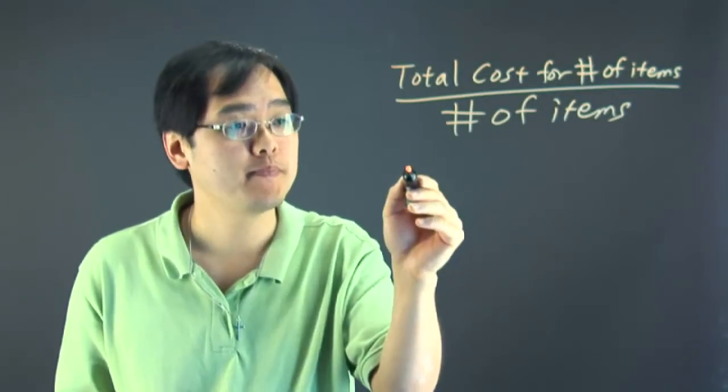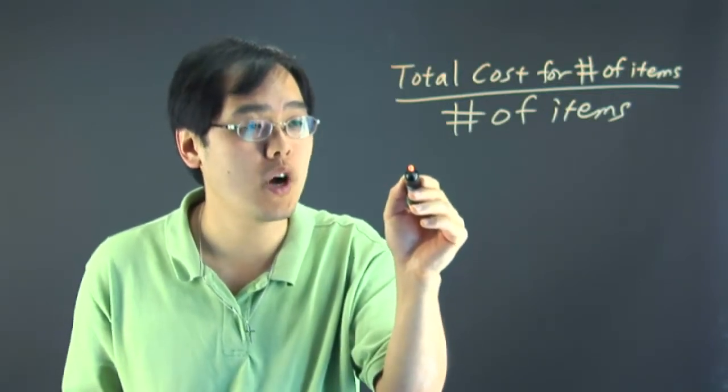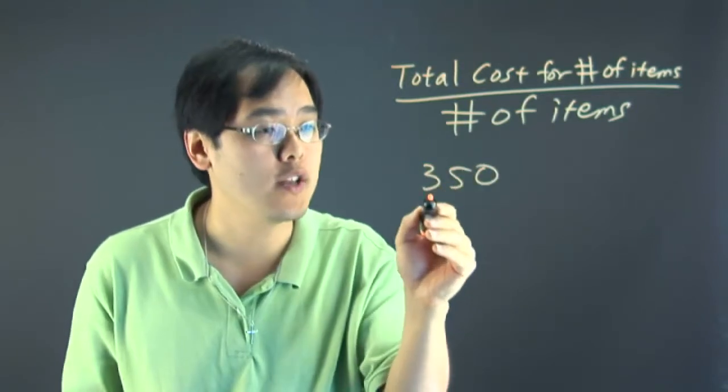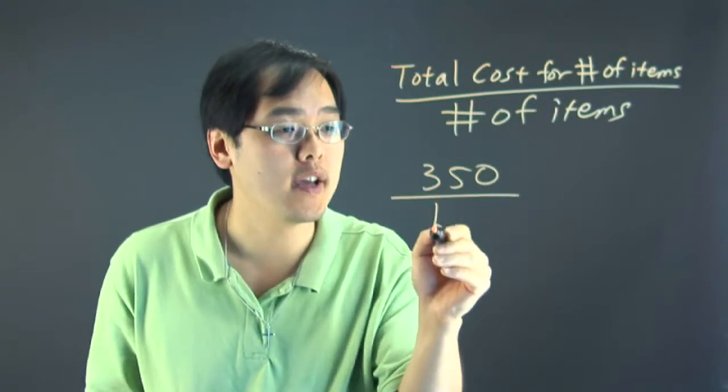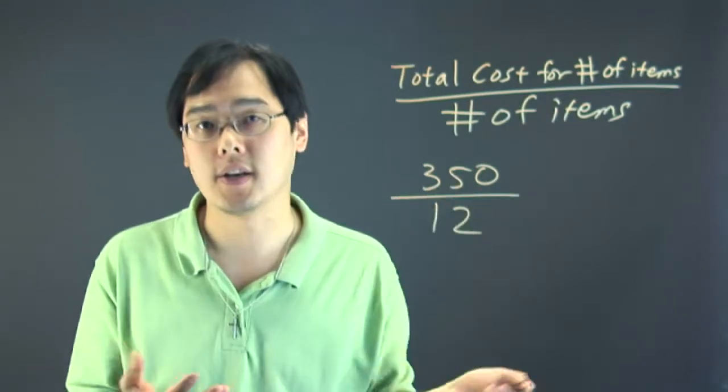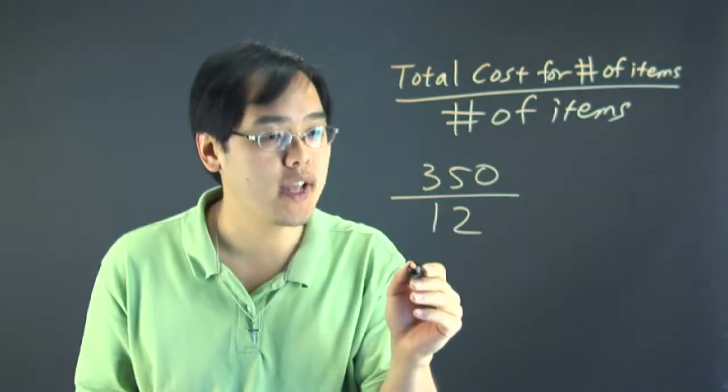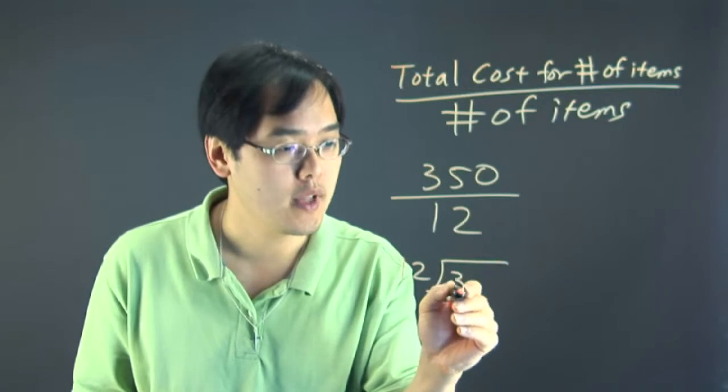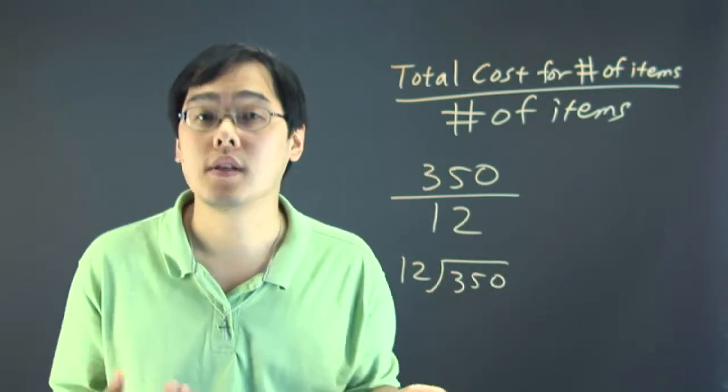So for example, if you have your total cost being 350 and you were buying 12 items, just take 350 and divide by 12 and then all you need to do is perform the division. So in this particular case, if you have 12 items dividing into 350, it's a really simple division problem.